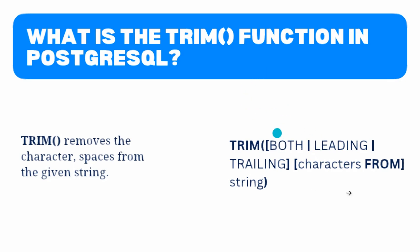The syntax for the trim function is as follows. We specify the trim function. The first parameter specifies whether you want to remove a character from both ends of the string — then use both. If you want to remove from the beginning of the string, use leading. And if you have to remove from the end of the string, then use trailing. The second parameter specifies the character you want to remove from the string. If you don't specify any characters, trim will remove spaces by default.